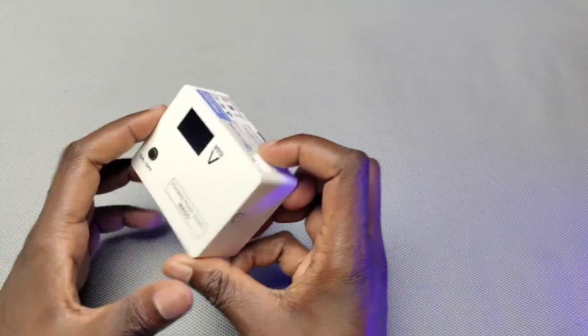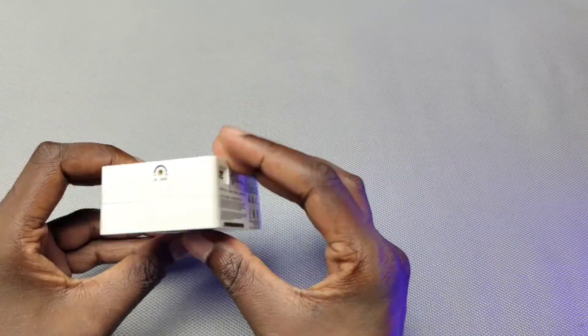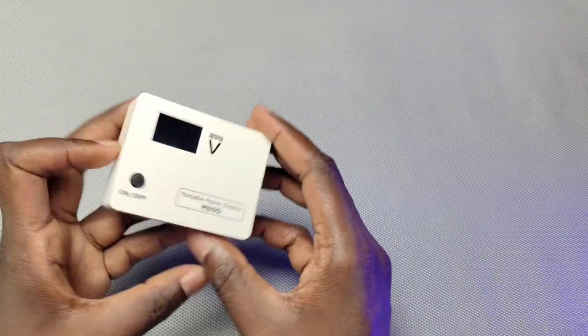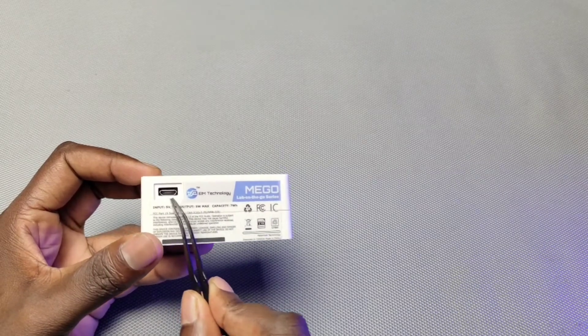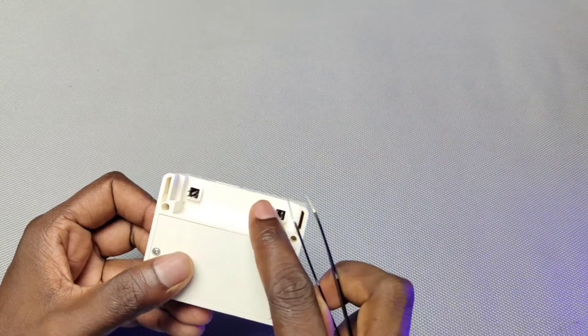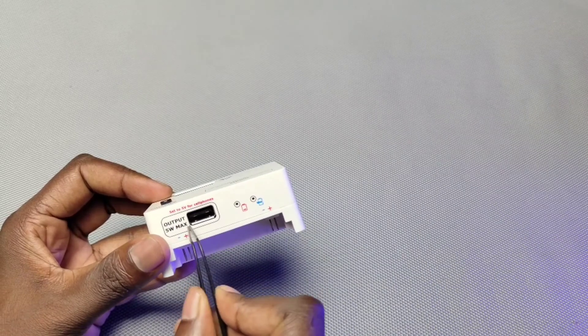So this is the Mego module. On the back side, we can see the micro USB port for charging. On the bottom side, we have the slot for attaching breadboards. This USB port can deliver 5V at maximum.